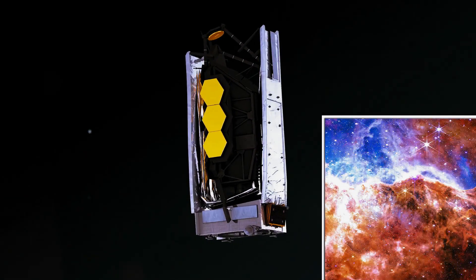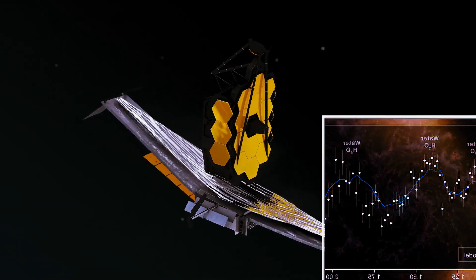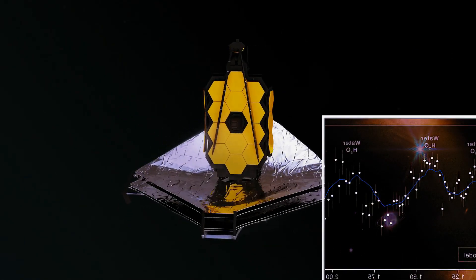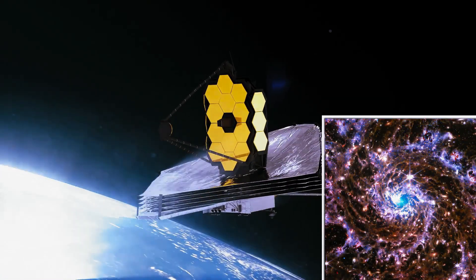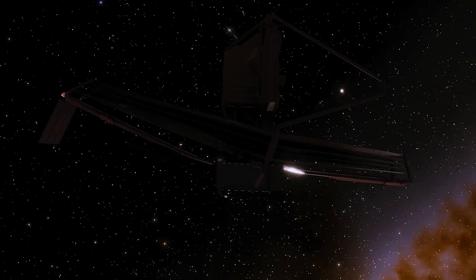The first deep field image of the cosmos taken by the James Webb Space Telescope, JWST, has allowed scientists to study the faint, almost ghostly light from orphaned stars that exist between galaxies and galactic clusters.